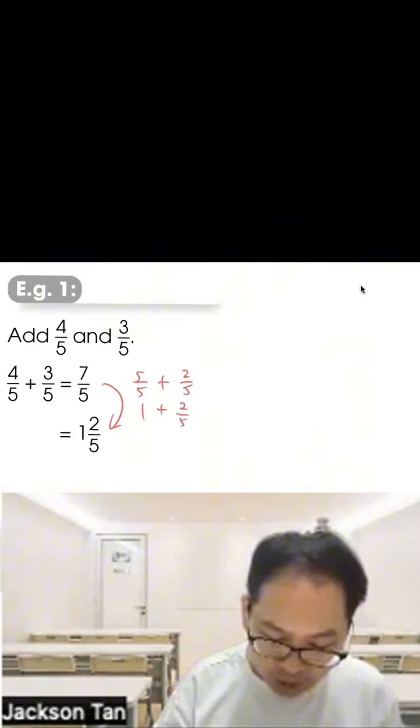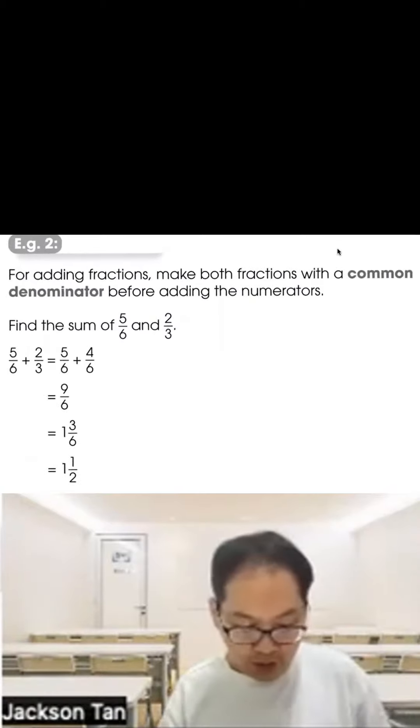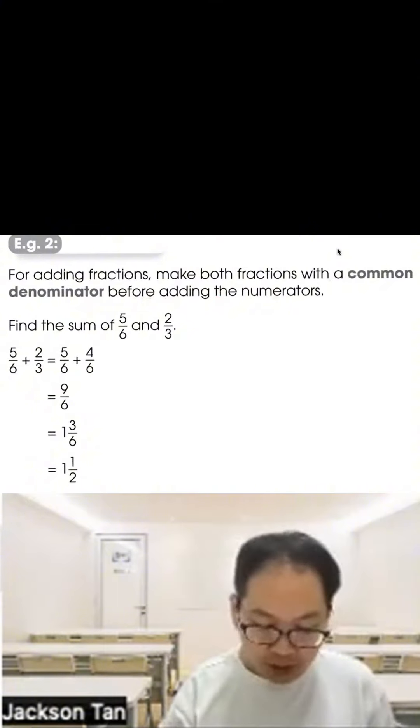Five fifths plus two fifths, so this one gives you one whole. That's how we get the answer one and two fifths. Example 2: For adding fractions, make both fractions with a common denominator before adding the numerator. Find the sum means to add. Do you realize the denominator is different?